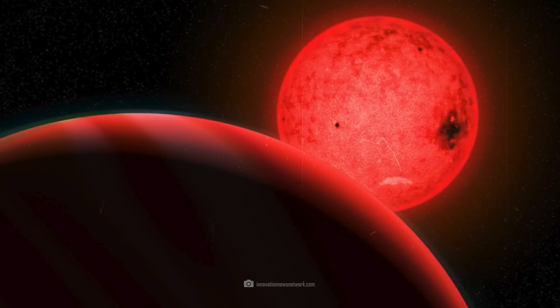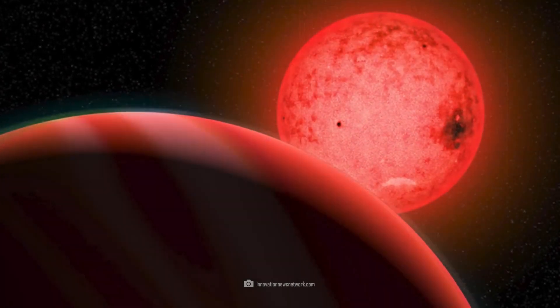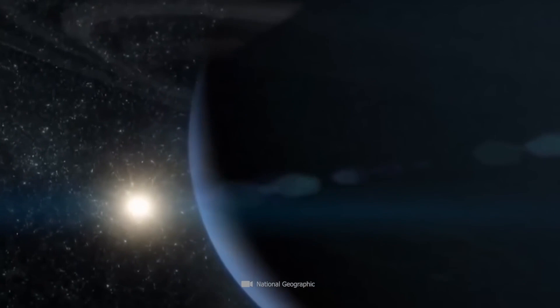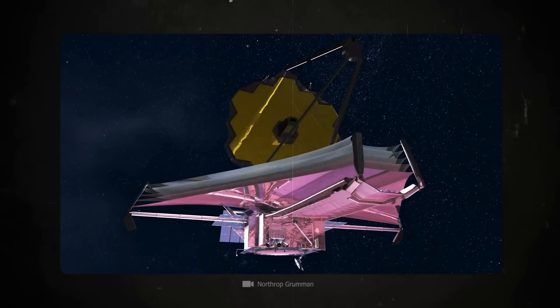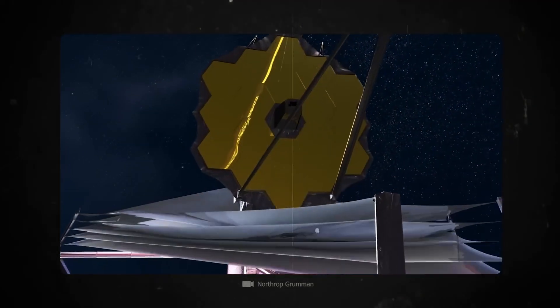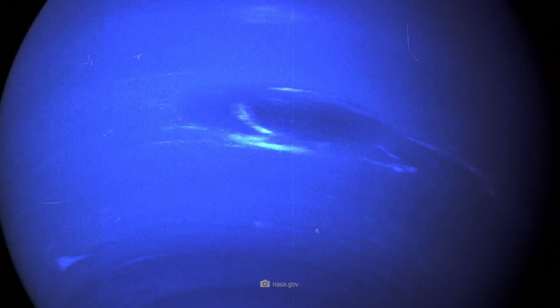Neptune also shows us many more details of its stormy atmosphere in infrared light, and we can see the planet's faint rings and its moon Triton with impressive clarity for the first time. Jupiter shows us the detailed structure of its atmosphere and its gigantic storms in different light frequencies.